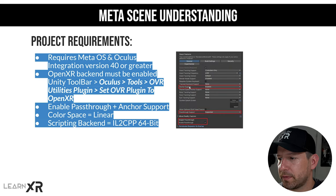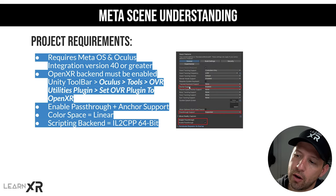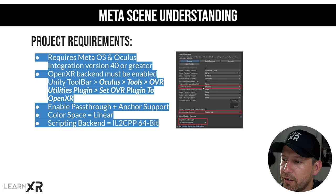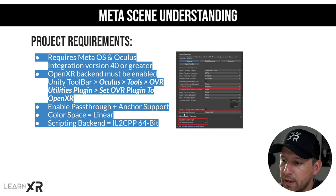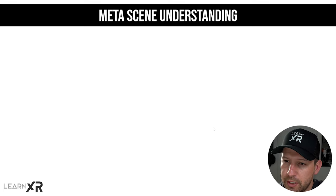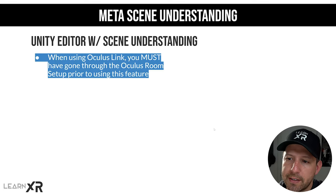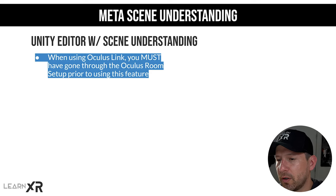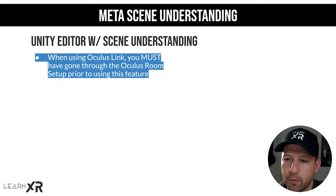Here is a screenshot of some of the settings on my OVR Camera Rig. Anchor support needs to be enabled — it basically goes back to this option here — and then passthrough support also needs to be set to supported, and Enable Passthrough has to be checked. If you're running on a PC and want to run things through Oculus Link, make sure that you go through the room setup prior to launching Unity.